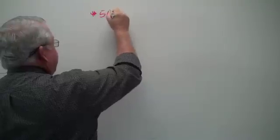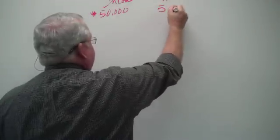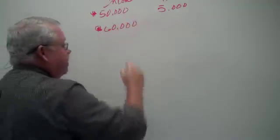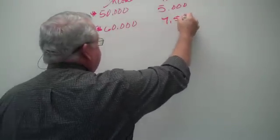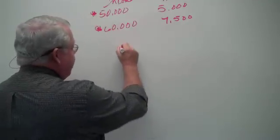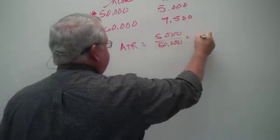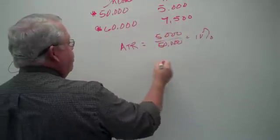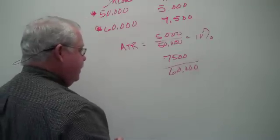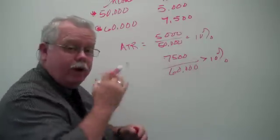Suppose that when your income is $50,000 your tax is $5,000, but if you get an increase in pay to $60,000, we observe that your taxes went up to $7,500. Well, first let's do the average tax rate: $5,000 over $50,000 was 10%, but now you're paying $7,500 out of $60,000 — your tax rate is going to be in excess of 10%. Your tax rate went up when your income went up: a progressive tax.